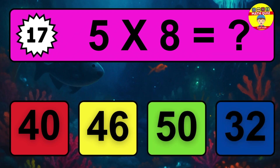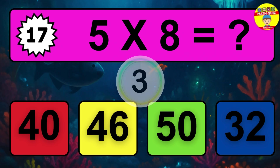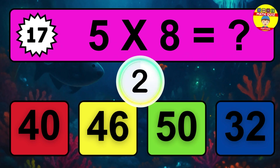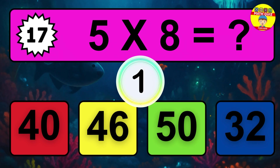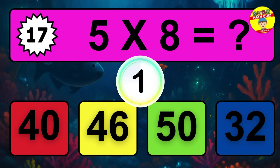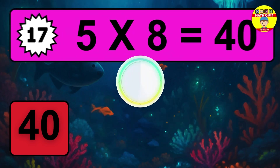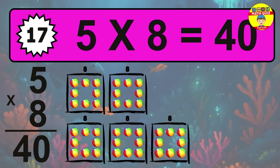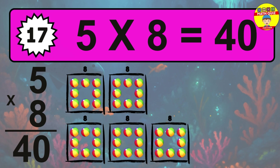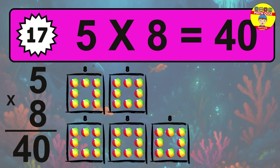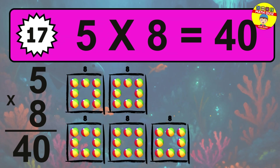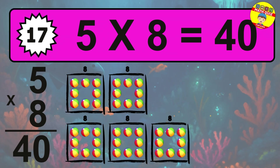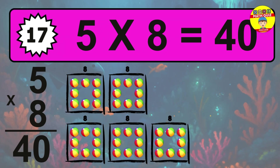Question 17. Five times eight equals what? The answer is five times eight is 40. To calculate, we have five groups with eight balls each one. So how many balls do we have? 40 balls.